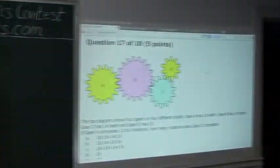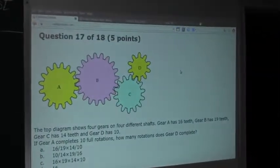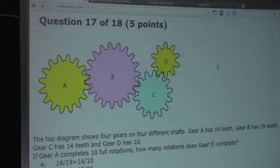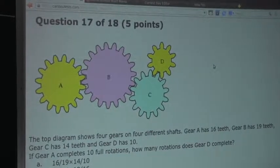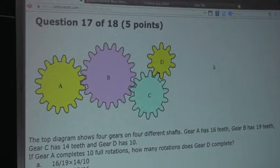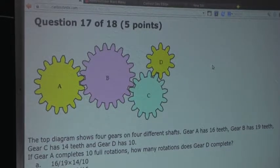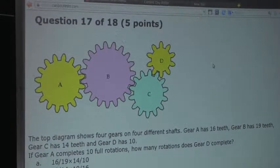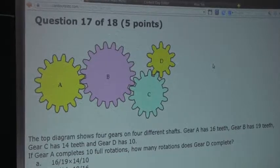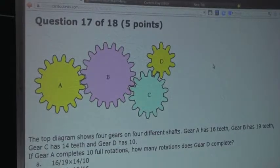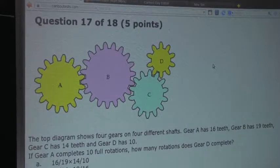So the question is, the top diagram shows four gears on four different shafts. Gear A has 16 teeth, gear B has 19 teeth, gear C has 14 teeth, and gear D has 10. If gear A completes 10 full rotations, how many rotations does gear D complete?